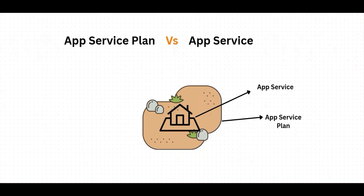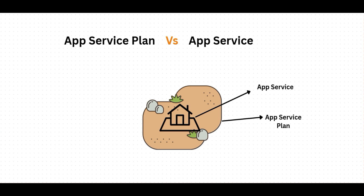A common point of confusion for beginners is the difference between App Service and App Service Plan. Here is a simple example: think of the App Service Plan as the land and the App Service as the house built on that land. The App Service Plan provides the infrastructure — CPU, memory, and scaling configuration — while the App Service is your application deployed on that infrastructure. I hope this overview gives you a clear picture of what Azure App Service is and how it works behind the scenes.